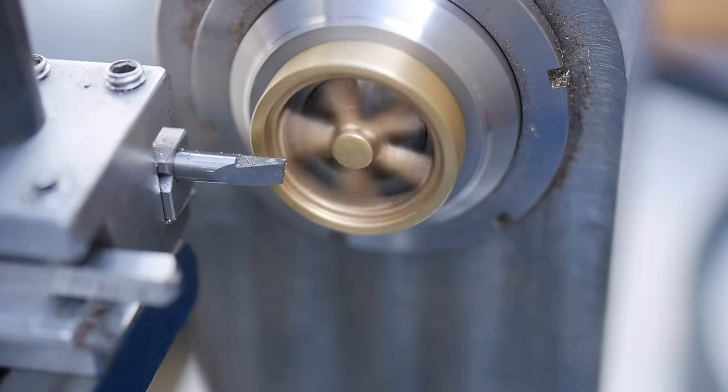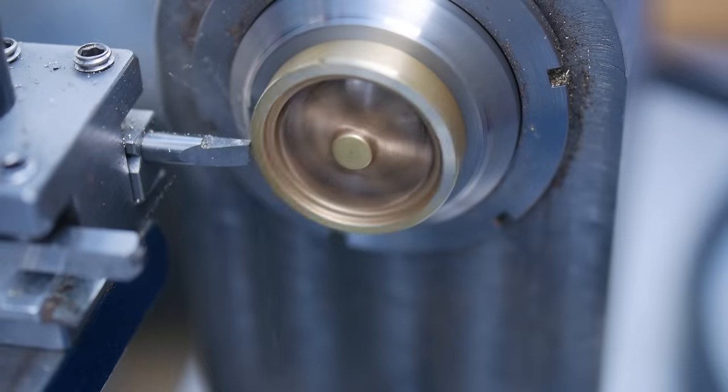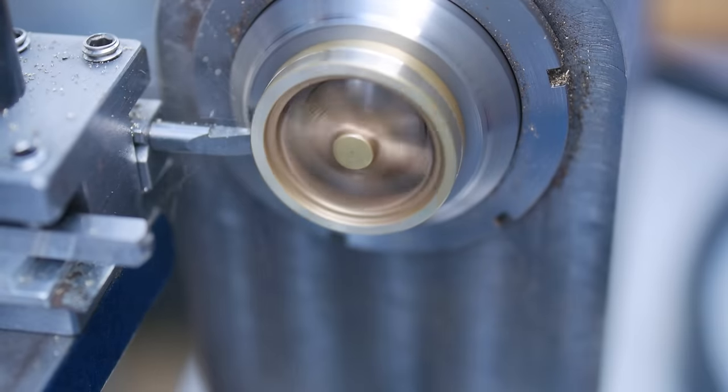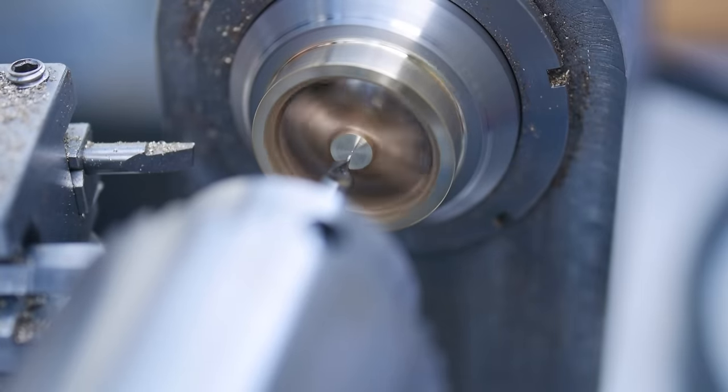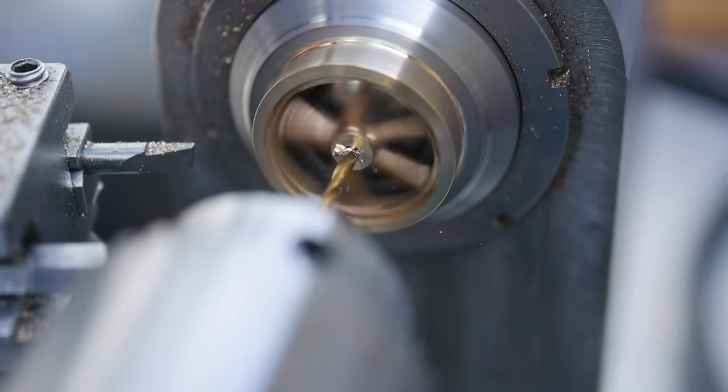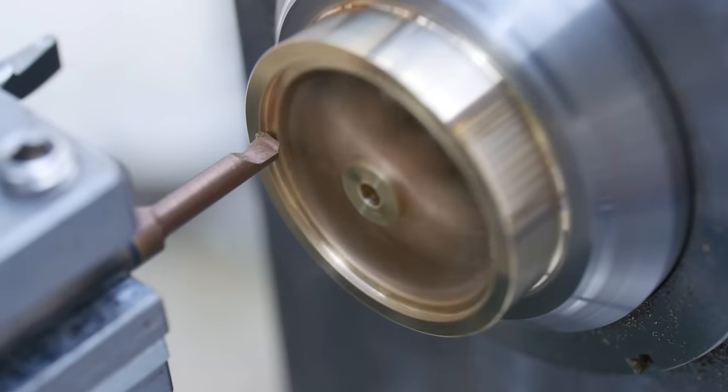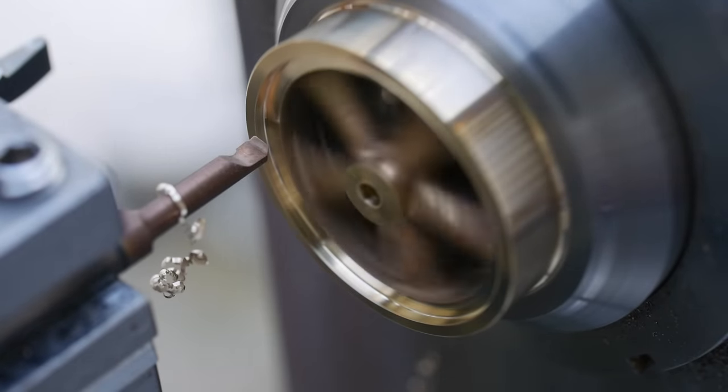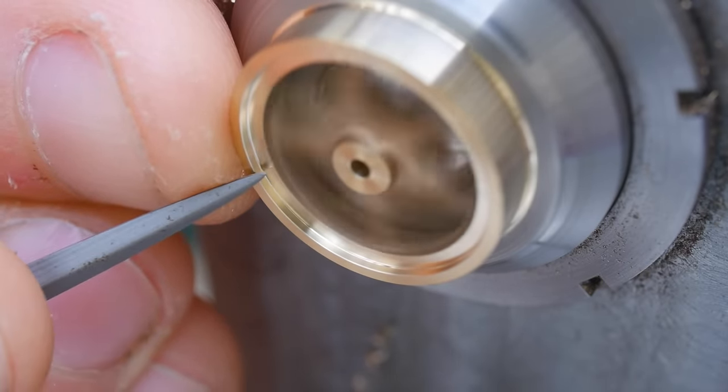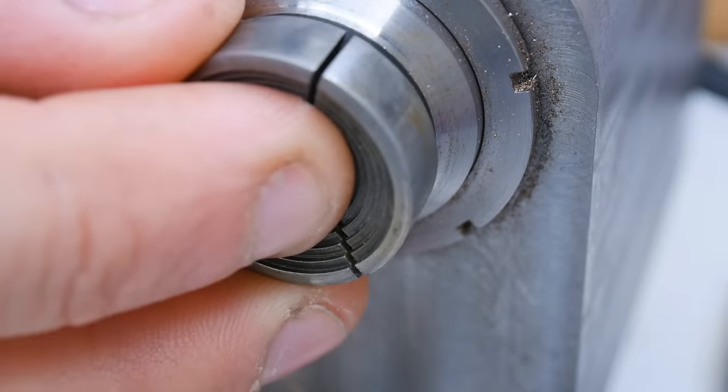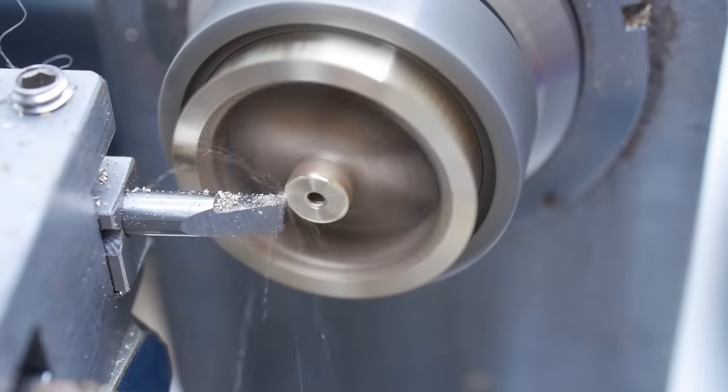The flywheel is then cleaned up in the watchmaker's lathe, and a 1.5mm hole for the main shaft is drilled in the centre. The flywheel is reversed and held in the step collet to finish up the other side of the component and shorten the boss.